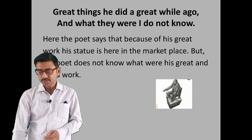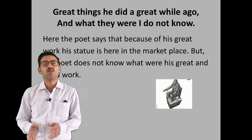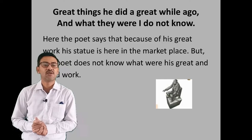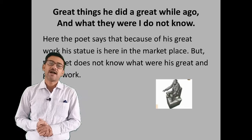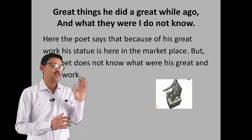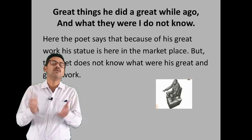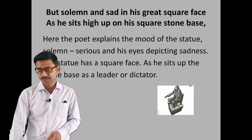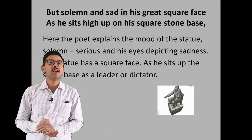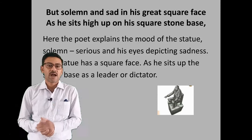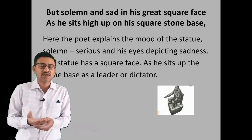The child or poet-as-child does not know from when the statue has been placed in the marketplace. Next: 'Great things he did a great while ago, and what they were I do not know.' The poet says that because of great work, the statue is here in the marketplace, but as a child he does not know what good work the statue's subject actually did.